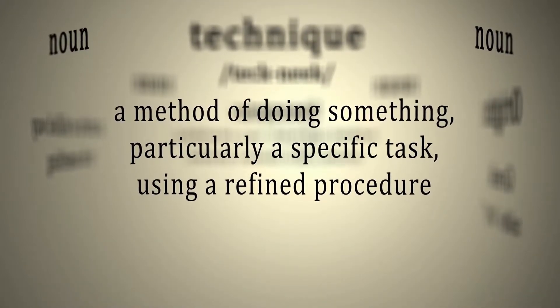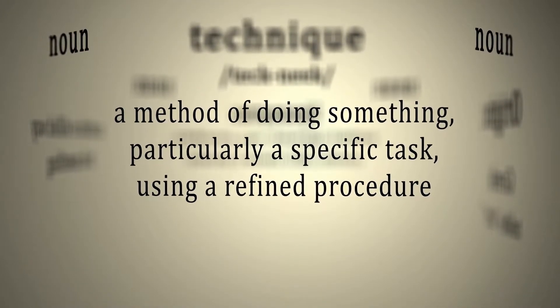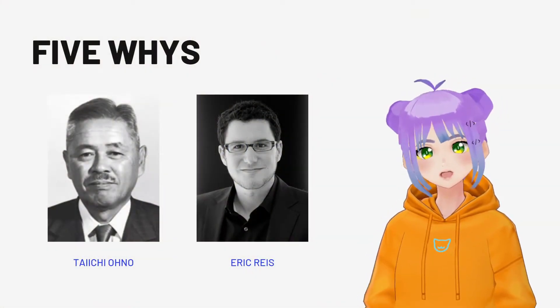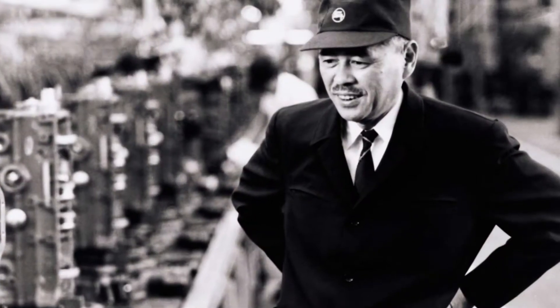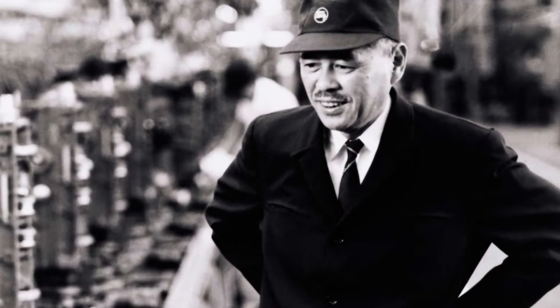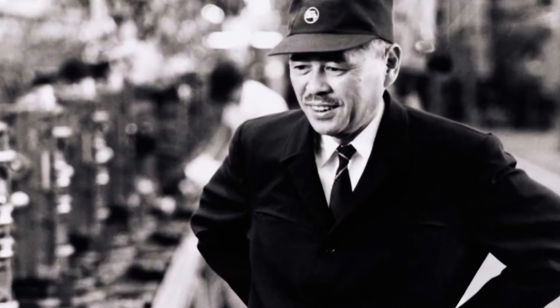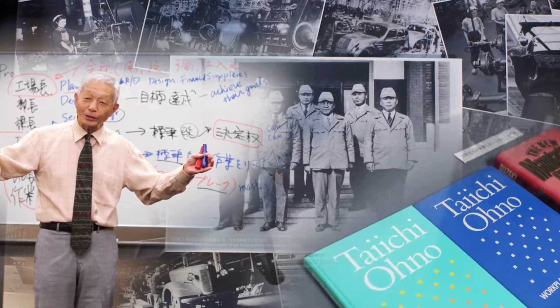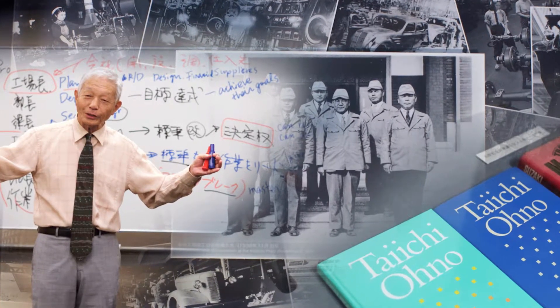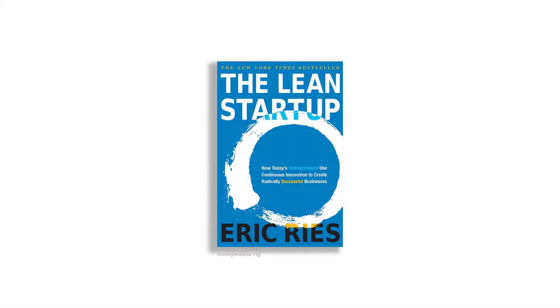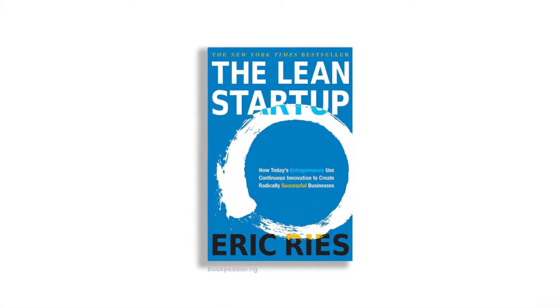Who came up with this kind of technique? Well, we have to thank Taichi Ohno, the father of Toyota, who developed this systematic problem-solving technique. And also Eric Ries, who in his book The Lean Startup made some changes designed specifically for startups.